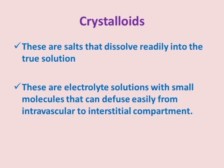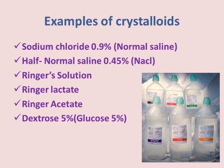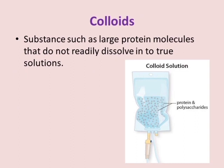Crystalloids are salts that dissolve readily into solution. These are electrolyte solutions with small molecules that can diffuse easily from the intravascular to the interstitial compartment. Examples of crystalloids include sodium chloride 0.9% (normal saline), half normal saline 0.45%, Ringer's solution, Ringer's lactate, Ringer's acetate, and dextrose 5%.